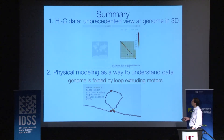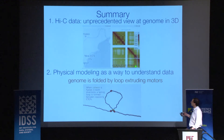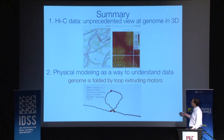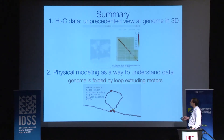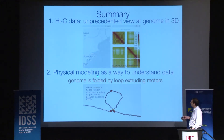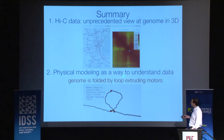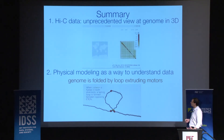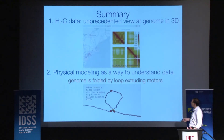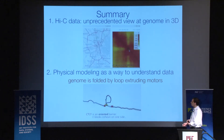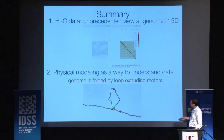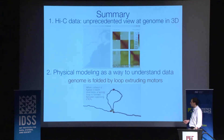To summarize: Hi-C data provides an unprecedented view of the folding of the human genome at the scale of maps — like Google Maps — with resolution we can now push down to roughly the size of a single house on the scale of a planet. Physical modeling is a way of understanding this data — not only feature detection, but a way to explain how patterns have been shaped by physical processes. What we learned in particular is that it's a non-equilibrium, active physical system where loop extrusion plays a central role.